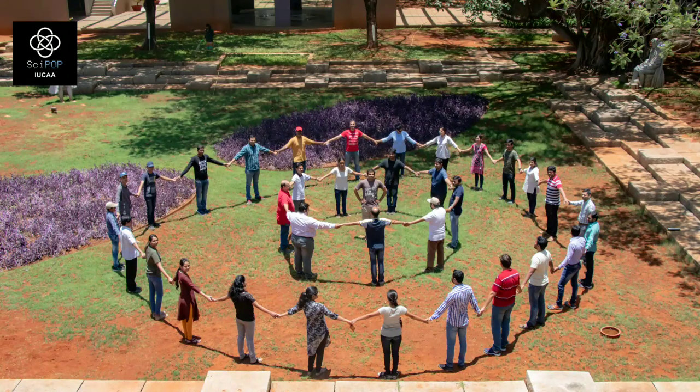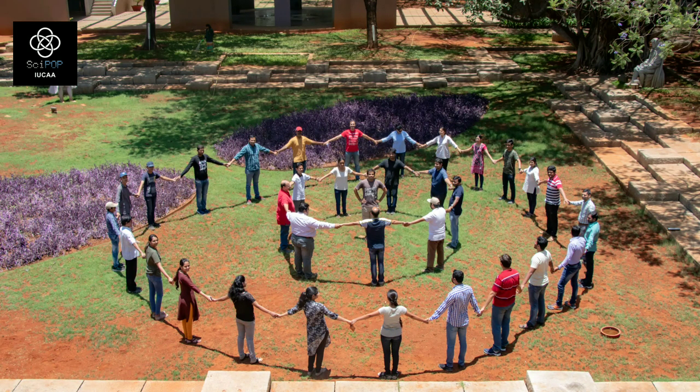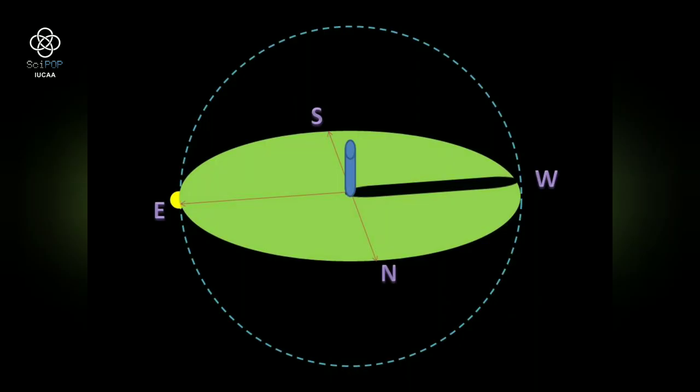As the northward movement of the sun from the equator has already started from March 21, many places at latitudes below 15 degrees north have already observed one of their two zero shadow days.